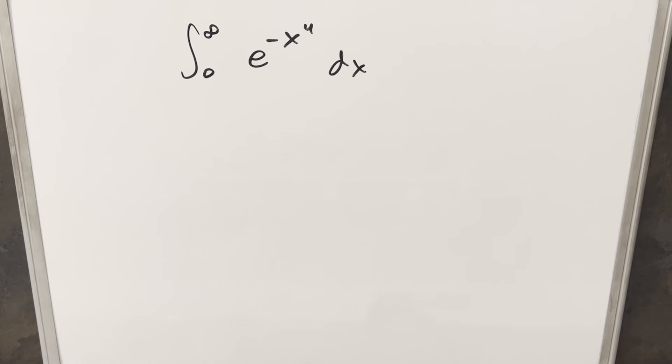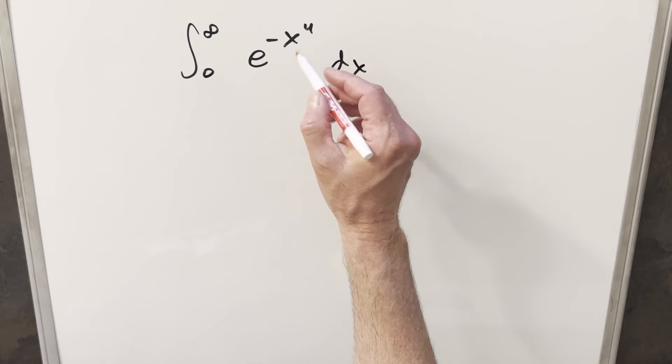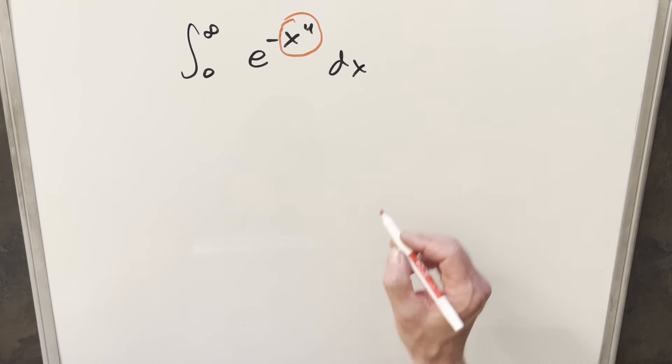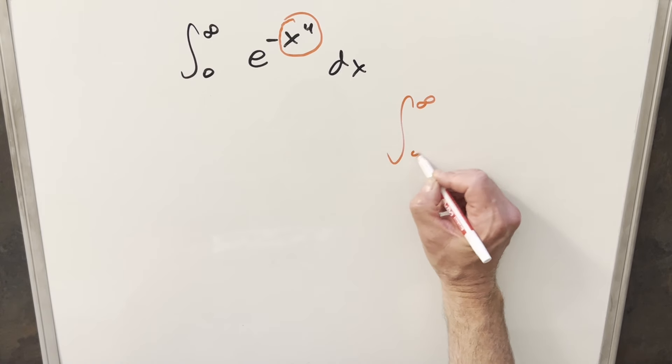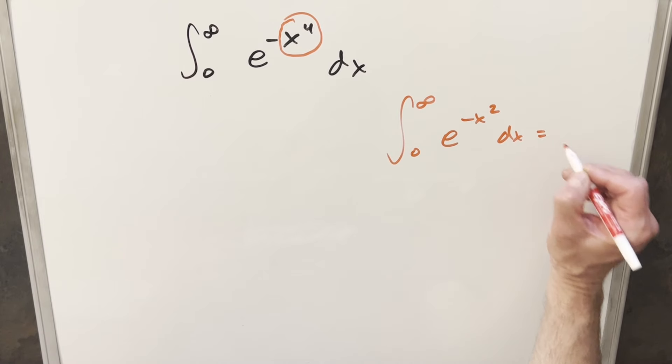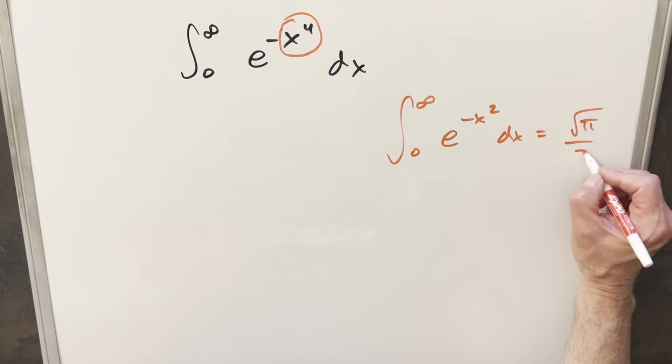We have a return of our integral. We've got the integral from 0 to infinity of e to the minus x to the 4th dx. Now, the first thing I noticed about this one was this exponent that looks so much like the Gaussian integral. For the Gaussian integral, the only difference is this is going to be e to the minus x squared dx, and this is actually equal to square root of pi over 2.